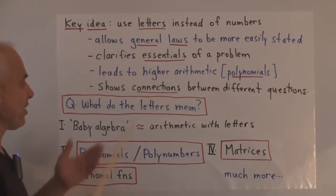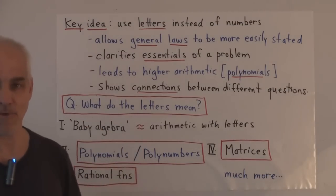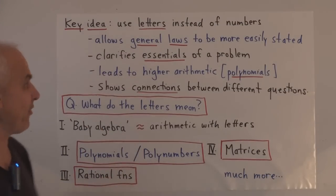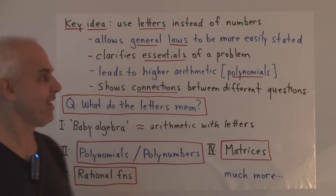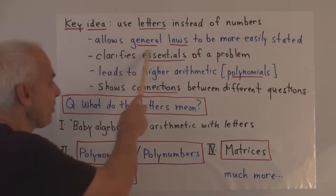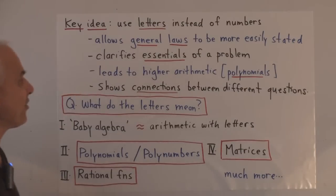Well, one of the key ideas, certainly, is that we're going to use letters instead of numbers or letters together with numbers. This has a lot of advantages and it allows general laws to be more easily stated, something that we've already done so far.